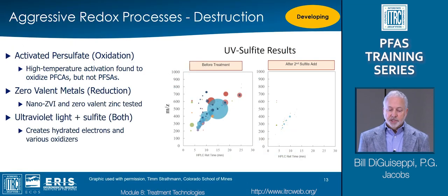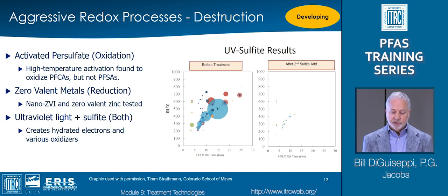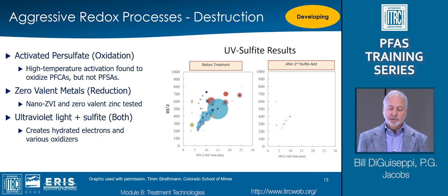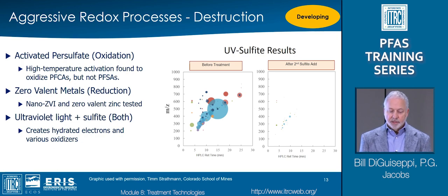Aggressive chemical oxidation and reduction, otherwise known as redox, is an area of intense research now. But thus far, all applications seem to have significant limitations as they require extreme conditions and do not destroy all PFAS to innocuous end products, but generally transform PFAS precursors or long-chain PFAS into shorter-chain PFAS. Activated persulfate oxidation has been demonstrated to be effective, but only at high temperatures in the 40 to 85°C range and at pH less than 3, and it is more effective on carboxylates than sulfonates. This higher temperature requirement is energy-intensive and limits field applications.